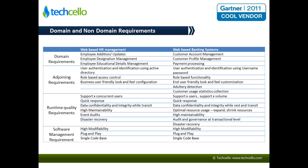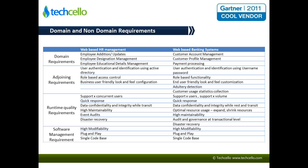The runtime quality requirements define the expectations of the software while it's live or in production. For example, the concurrency of users and the system's response time during various load stages. These requirements are common in nature, and between the HR system and the banking system, there are a lot of similarities in terms of runtime quality requirements.